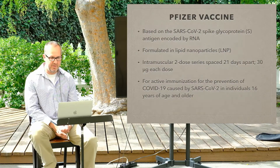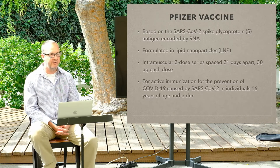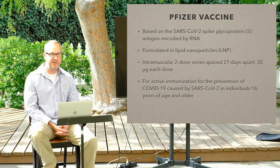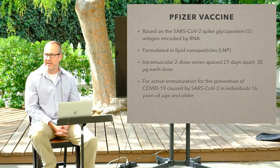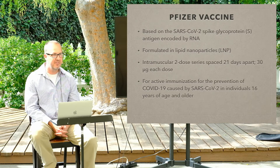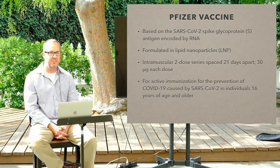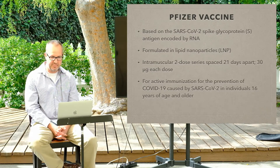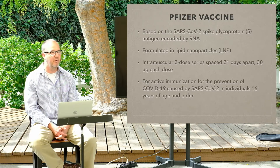The Pfizer vaccine — this is the one I got. I did a lot of research on it because I was skeptical at the beginning, wanting to know what they were going to shoot into my body on a fairly new technology. Basically, it's that spike protein — it has lipid nanoparticles as the envelope to get it in there. There are two shots, three weeks apart, and it's for 16 and older.